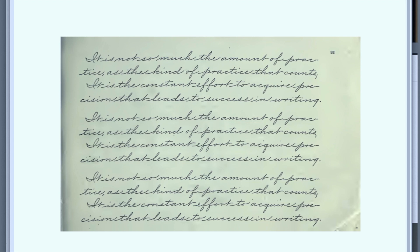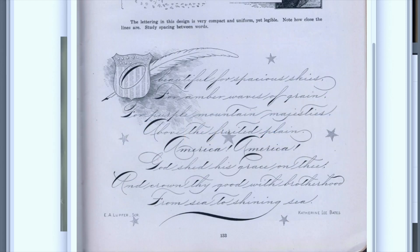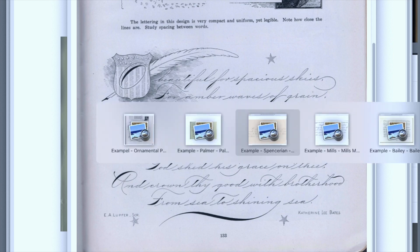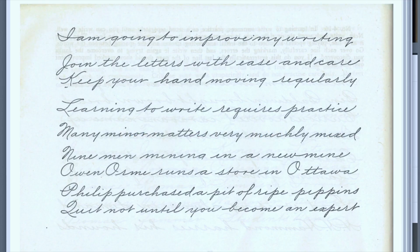We can also see a further evolution — really a branching. Spenserian kind of split into two traditional American scripts. It split in the more practical direction into business penmanship, and then it split artistically into ornamental penmanship. You think of it like a branching situation. Looking at ornamental penmanship here, you can see this is much more artistic than the practical Spenserian penmanship, and obviously much more artistic than, say, the Bailey business penmanship.